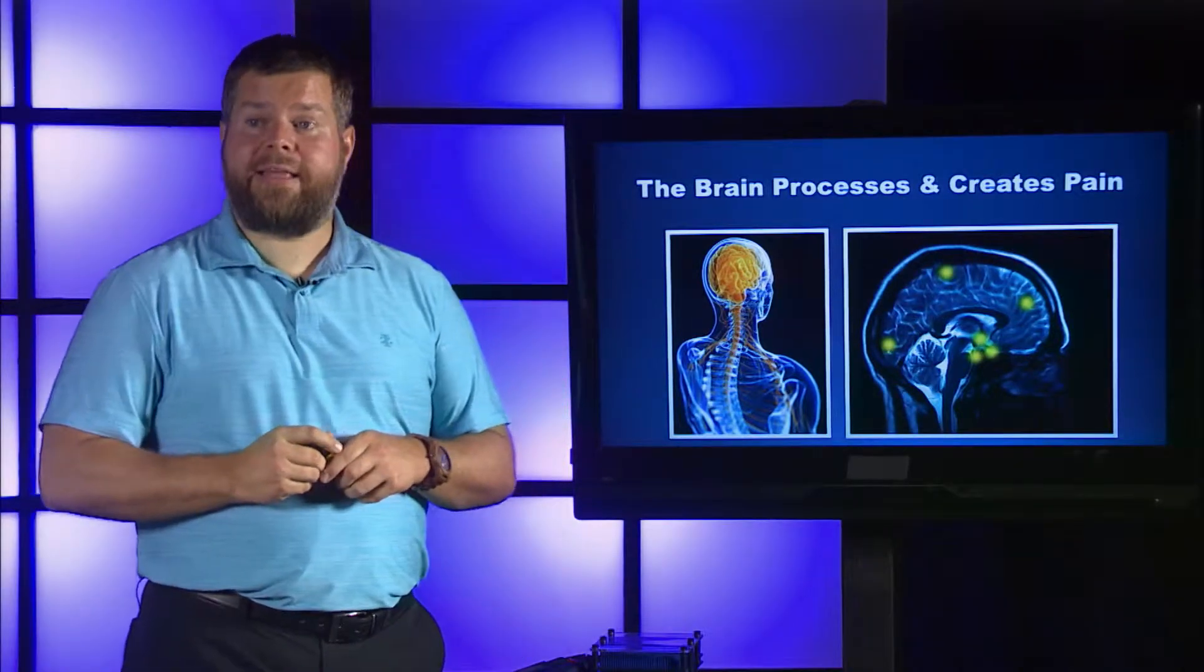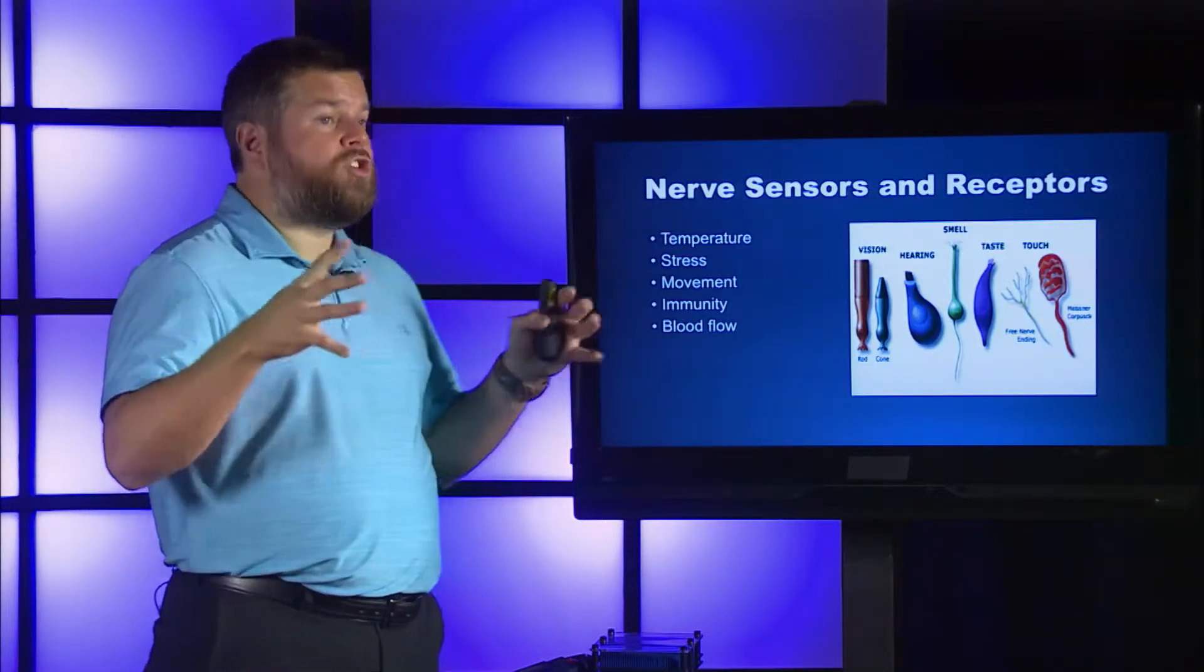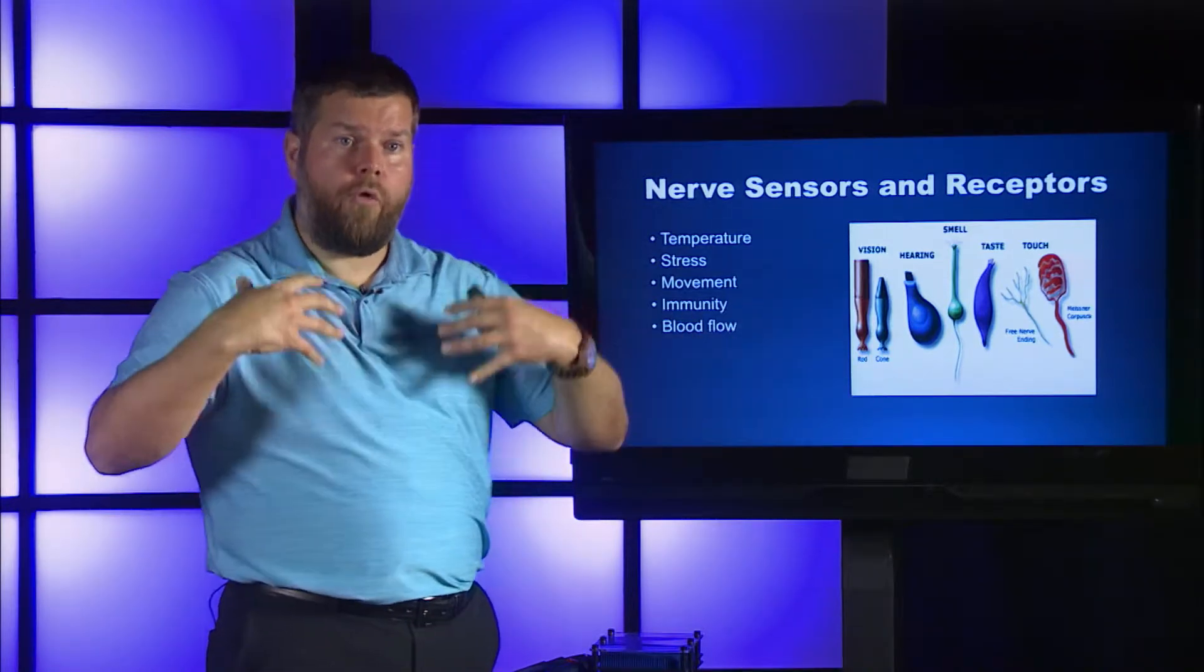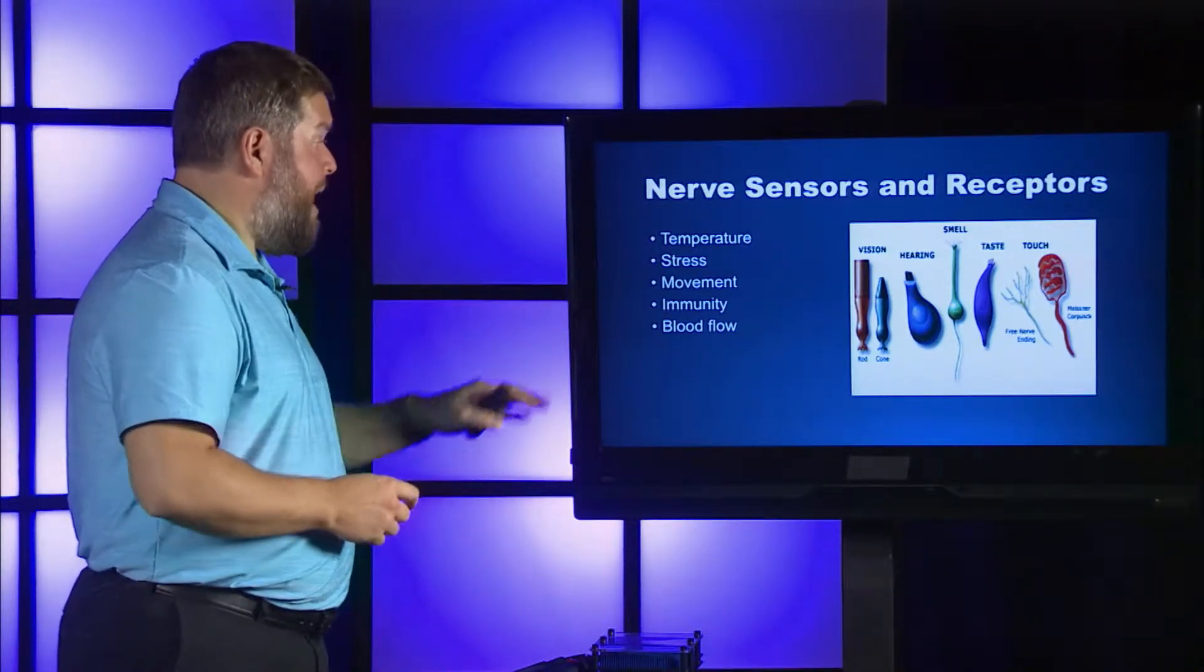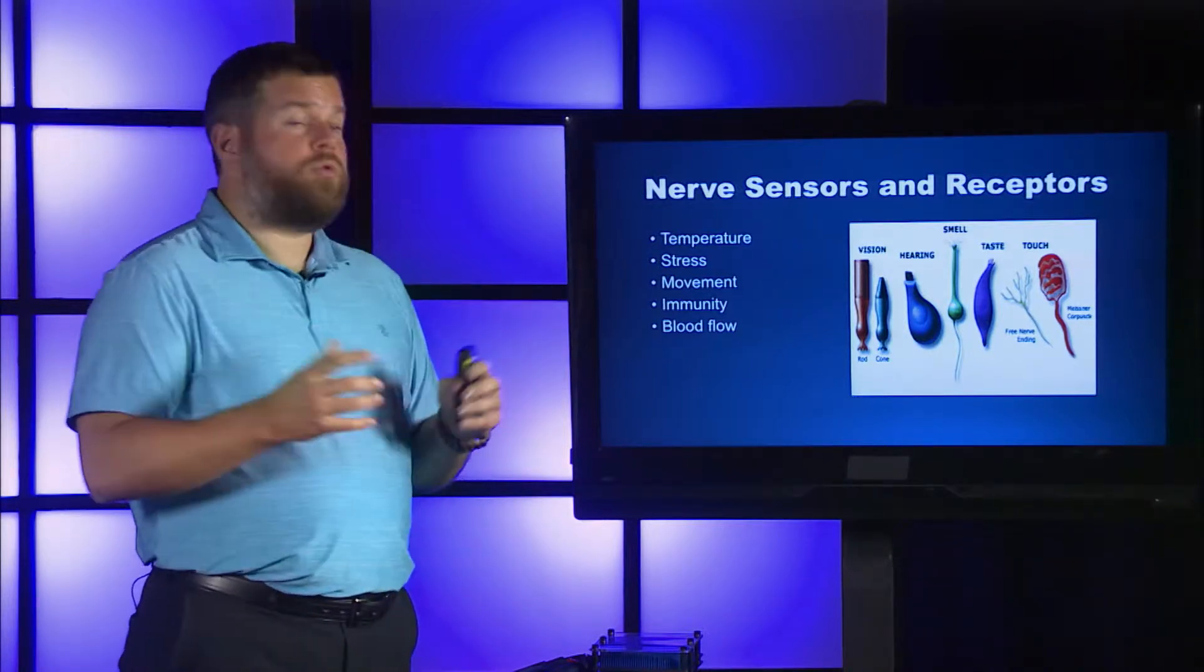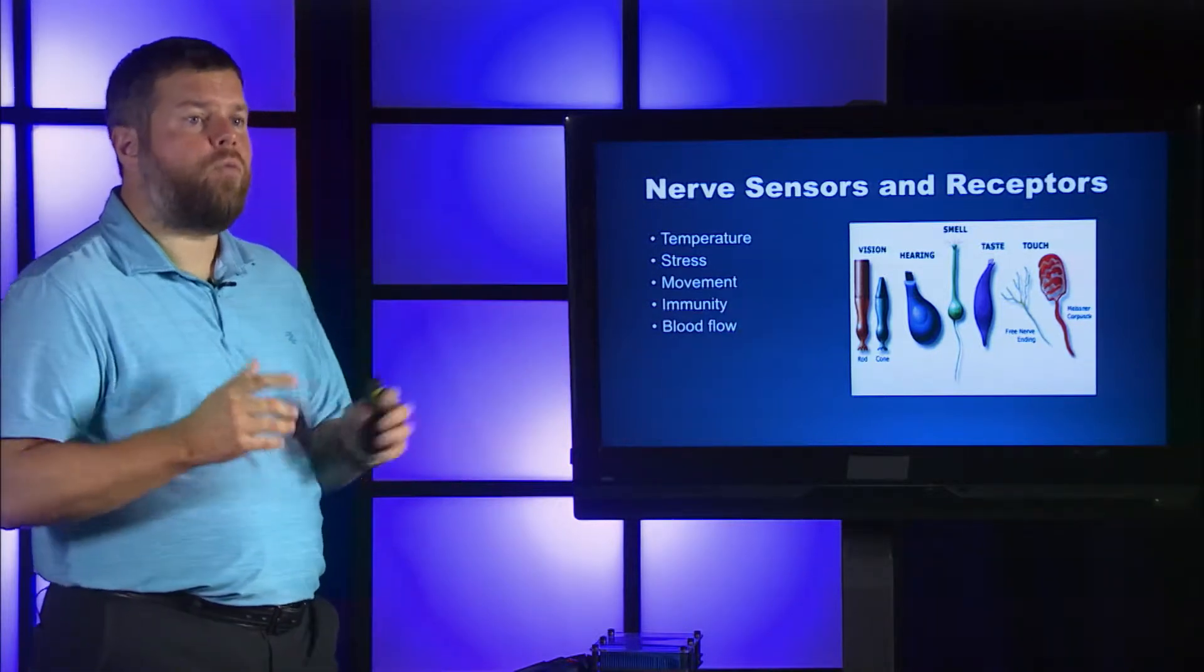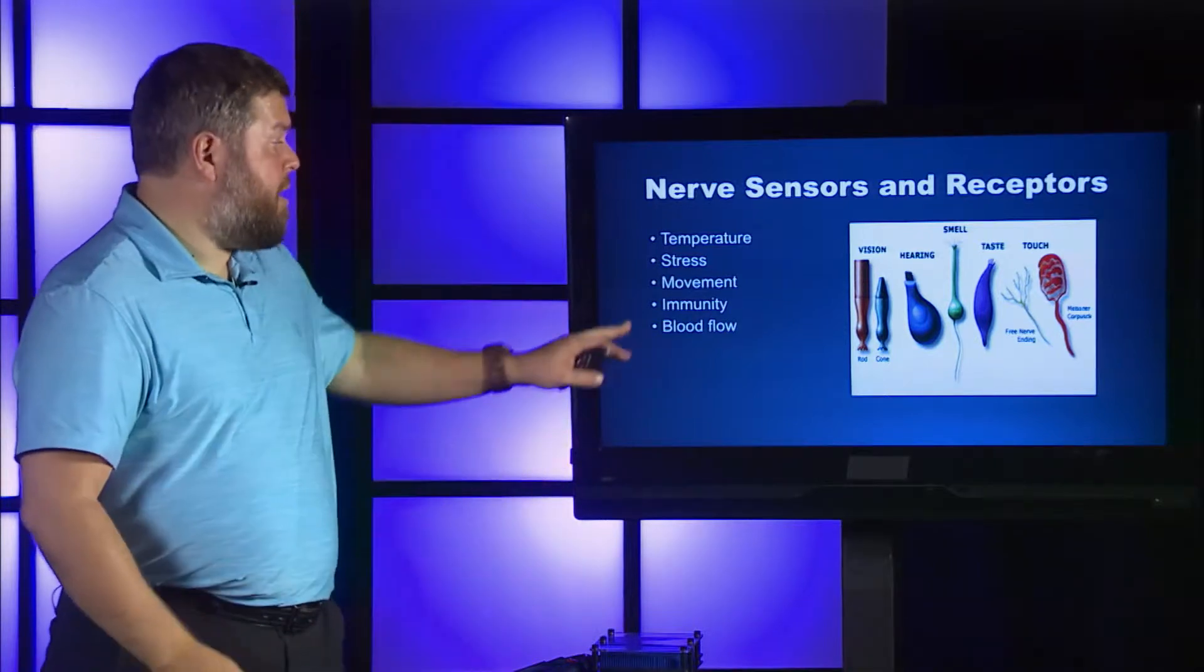We have so many different sensory receptors in our body at any given time that are constantly receiving information over and over. We have temperature receptors, stress receptors, movement receptors, receptors that actually gauge our immunity function, receptors that gauge blood flow. What can happen when a person is experiencing chronic pain is that if there is an area that says, oh hey, I'm not getting enough blood flow...